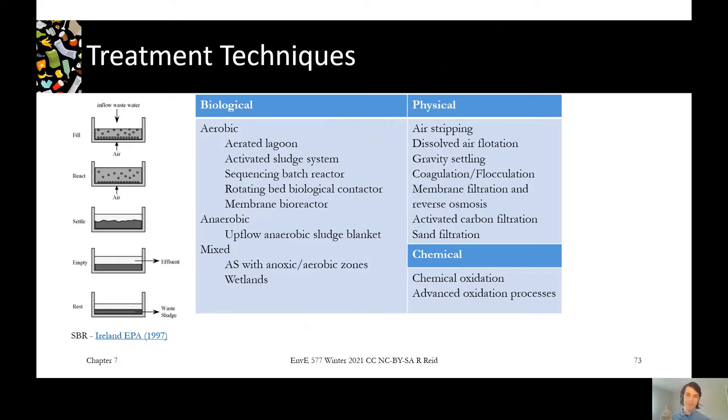So we've got things like air stripping to take out volatile things like ammonia and some of those dissolved gases, methane. Dissolved air flotation can help remove some grease and solids. Gravity settling, just like our first step primary clarifier in normal wastewater treatment process, we can get some of that high solids load out.